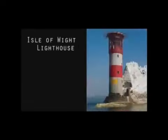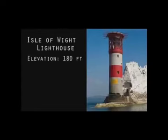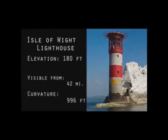Proof 88: The Isle of Wight Lighthouse in England is one hundred and eighty feet high, and can be seen up to forty-two miles away, a distance at which modern astronomers say the light should fall nine hundred and ninety-six feet below the line of sight.